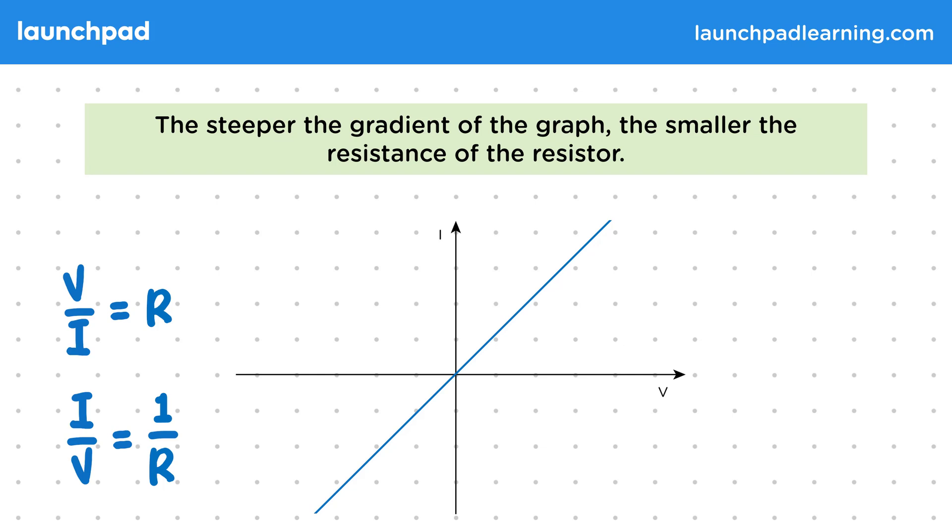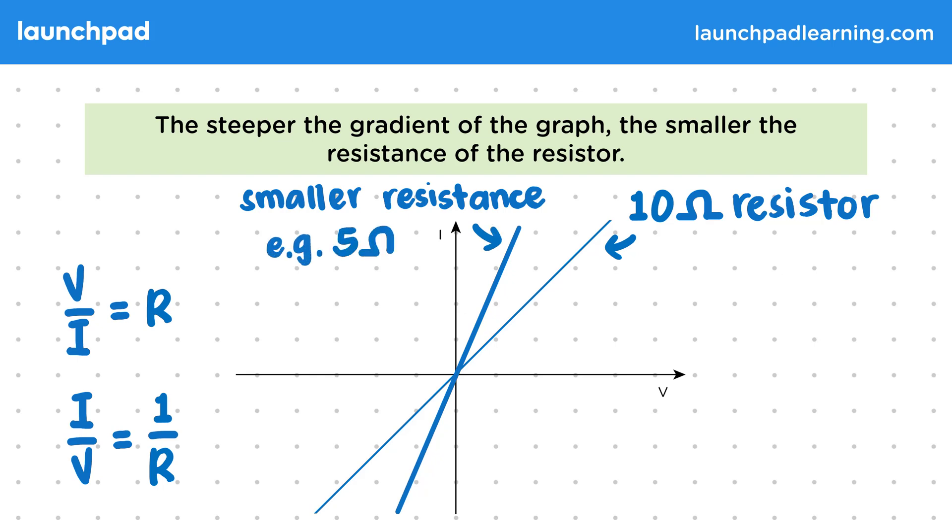So how would this affect the shape of ohmic graphs? Well let's suppose this graph is for a 10 ohm resistor. Then a steeper graph, like this, would be for an ohmic conductor with a smaller resistance, let's say 5 ohms. And this shallower graph would be for a conductor with a larger resistance, such as 20 ohms.